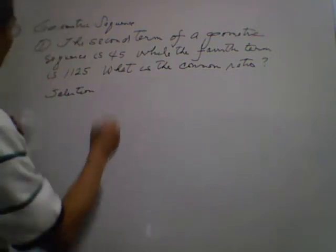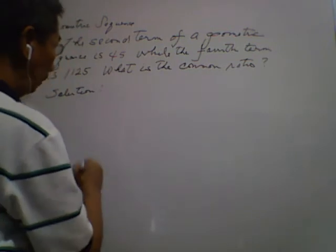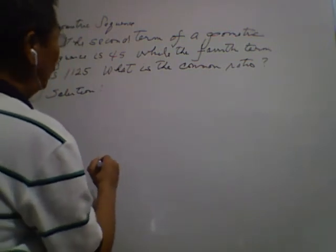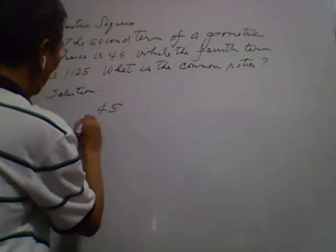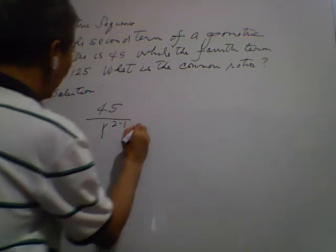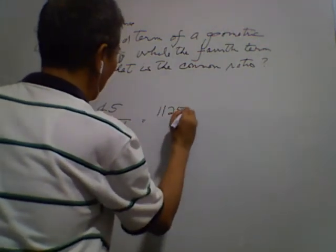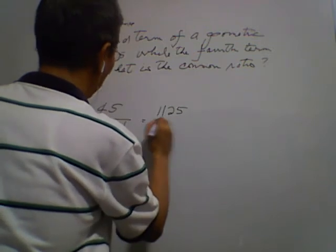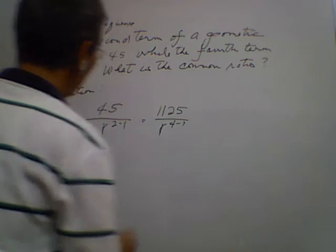In solving this kind of problem, we're going to use a ratio. For example, we have here 45 over r sub 2 minus 1 is equal to 1125 over r sub 4 minus 1.